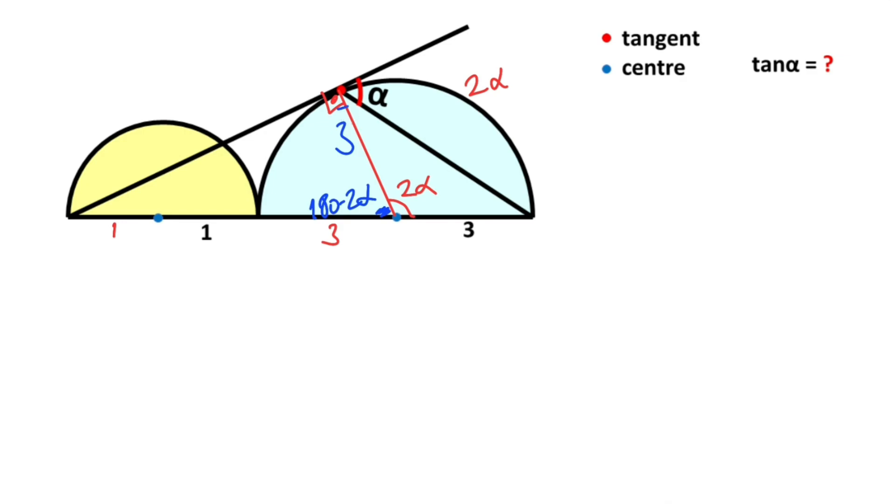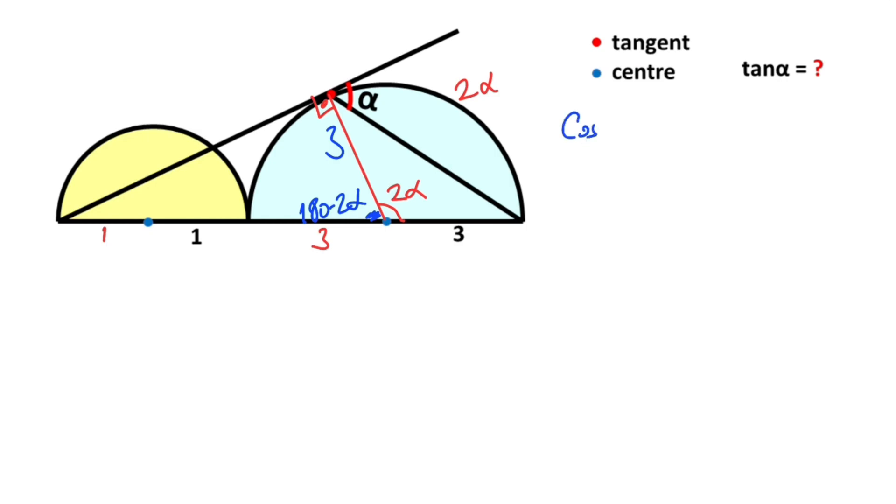Notice that we know this side and hypotenuse. Therefore, if we calculate cos(180 - 2α), we get 3/5.